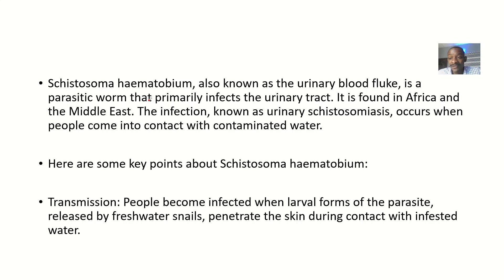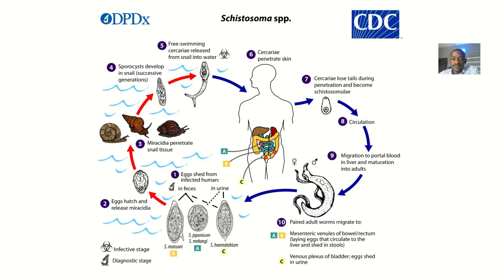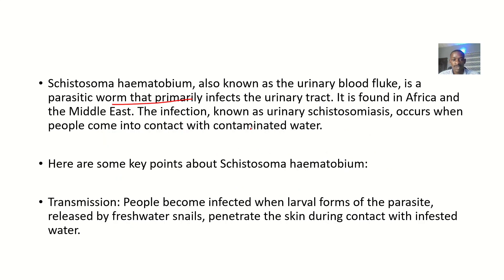Schistosoma hematobium is also known as the urinary blood fluke. It is a parasitic organism that primarily infects the urinary tract, but it can also cause problems in the large intestines and small intestines. It is dominantly found in Africa and the Middle East.